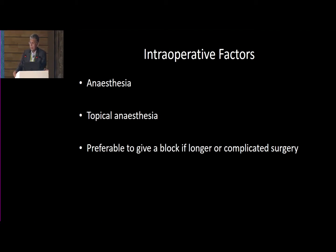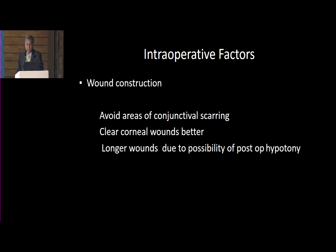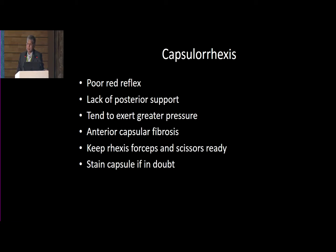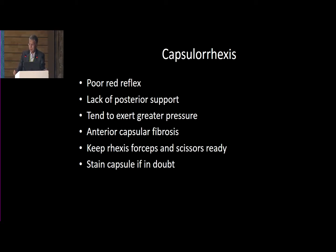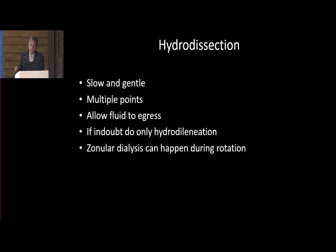For intraoperative factors, topical anesthesia is preferable because these patients may have a posterior staphyloma, but if you're expecting a long or complicated surgery, it's preferable to give a block. For wound construction, avoid areas of conjunctival scarring — clear corneal wounds are better, and you should make the wounds a little longer due to the possibility of postoperative hypotony. It's better to suture up these wounds at the end of surgery. Capsular rhexis can be very difficult because of poor red reflex and lack of posterior support, which causes you to exert greater pressure. There can be anterior capsular fibrosis, so keep rhexis forceps and scissors ready to cut the capsule if required. If in doubt, it's always better to stay in the capsule rather than trying to work on the red glow.